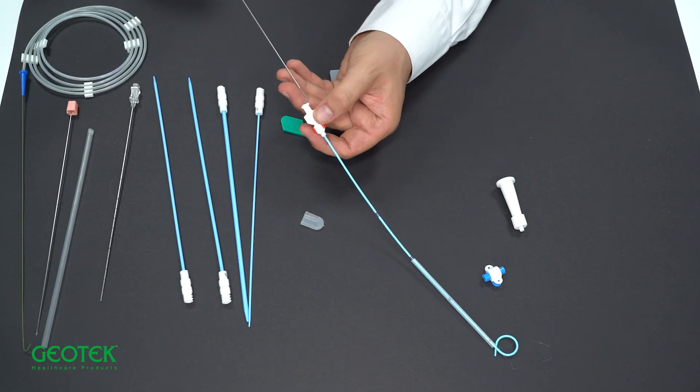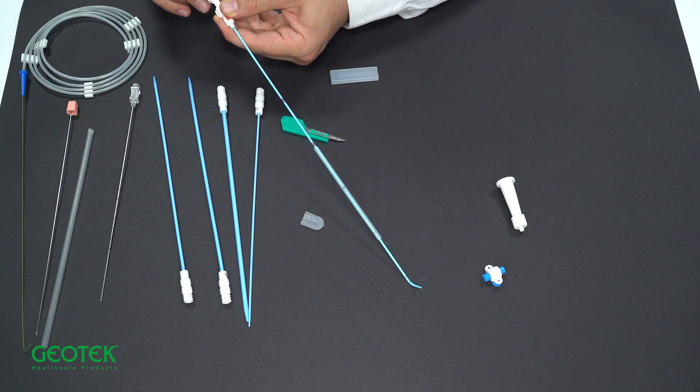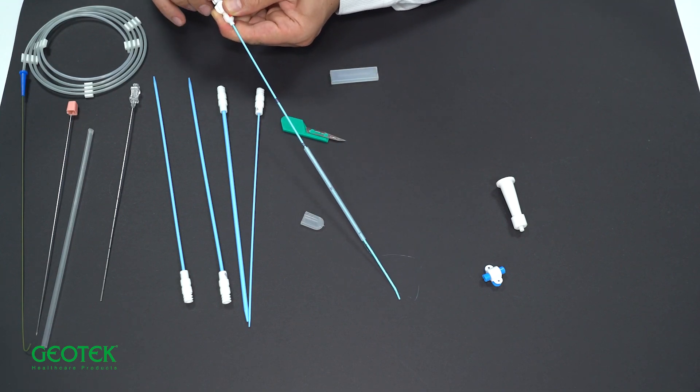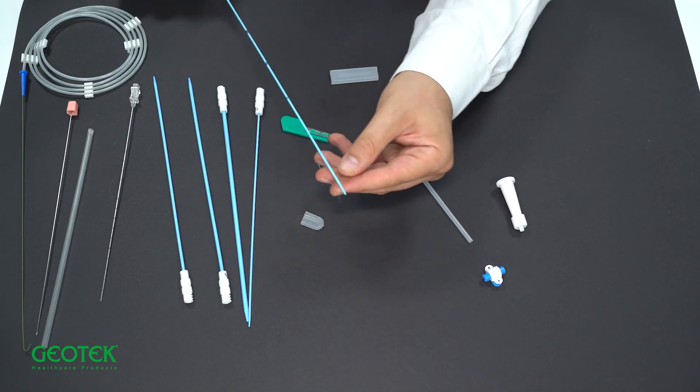After adequate dilatation is achieved, the percutaneous nephrostomy is flattened with a blunt-tipped obturator. Percutaneous nephrostomy is advanced into the collecting system through the guide wire.